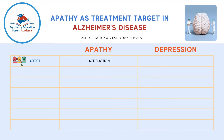Number one is affect. In apathy, a person lacks emotion, whereas in depression you see emotions ranging from sadness to tearfulness.